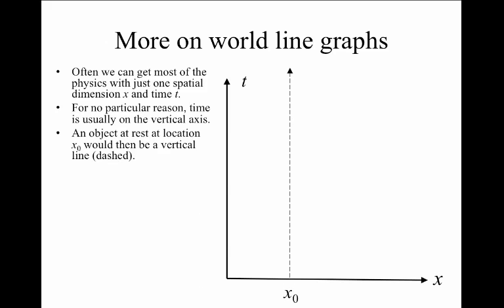In such a graph, then an object staying at rest would just be a vertical line. So I've just graphed here the world line or the trajectory for a particle that starts out at time t equals 0 down here. And if it's at rest, then it continues to be at this coordinate x0 at later times. And therefore, that world line has to be a vertical line.